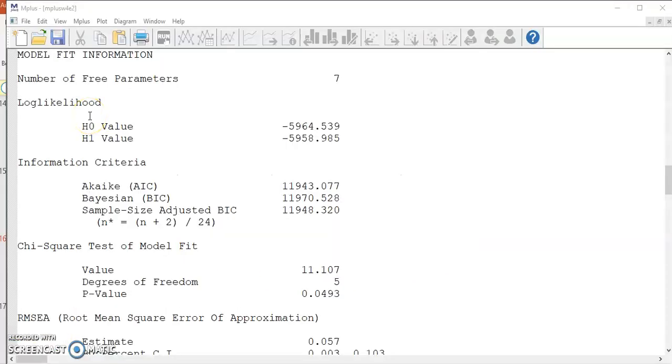With the information we just learned, now we are ready to look at the model fit information in the Mplus output file. The first thing we are going to look at is the chi-square statistic. For this model, the chi-square value is 11.11 with a degrees of freedom of 5. It's statistically significant if you use alpha equals 0.05. Remember, we want to have a non-significant chi-square statistic to indicate good model fit.